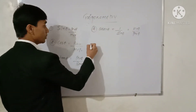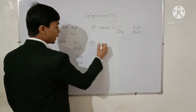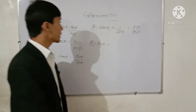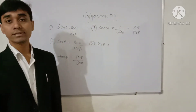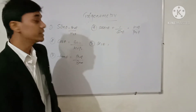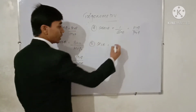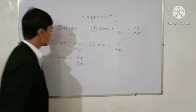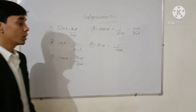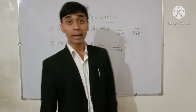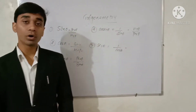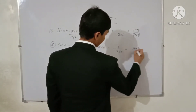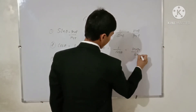The next Trigonometric ratio is sec theta. Just as cosec theta is the reciprocal of sin theta, sec theta is the reciprocal of cos theta. So sec theta is equal to 1 by cos theta. Since cos theta is base upon hypotenuse, sec theta equals hypotenuse upon base.